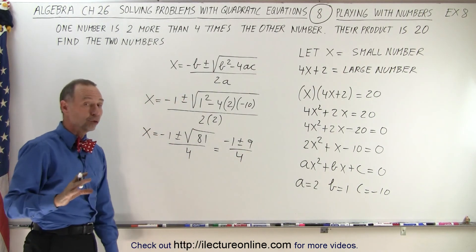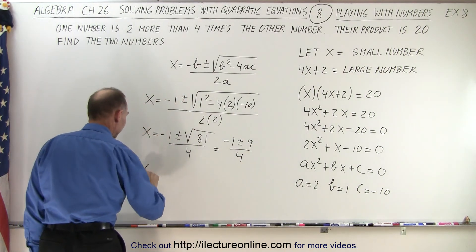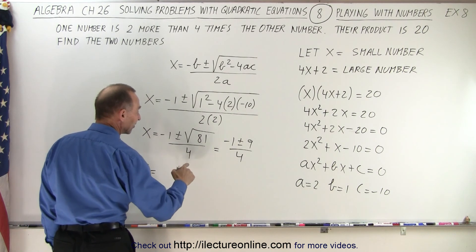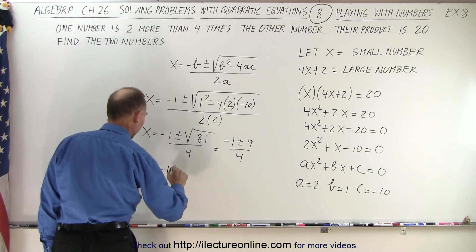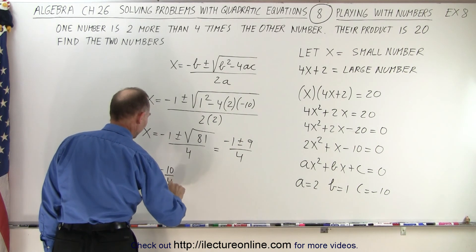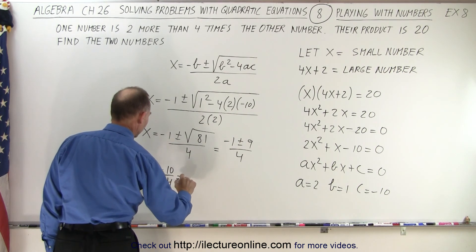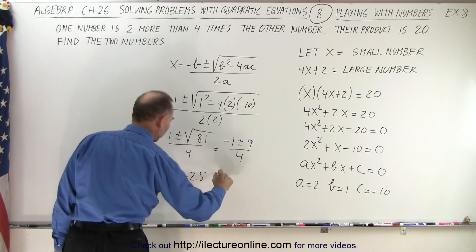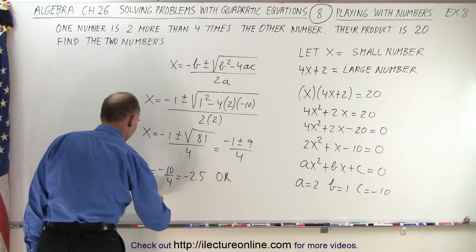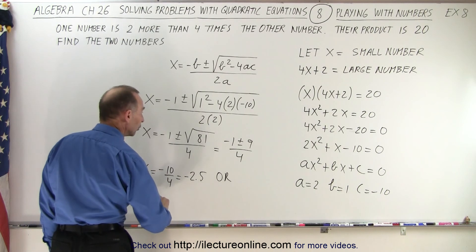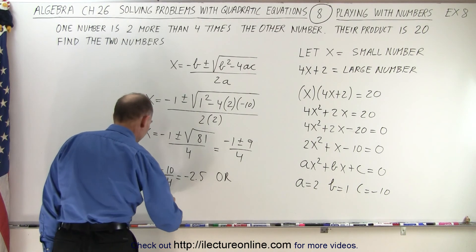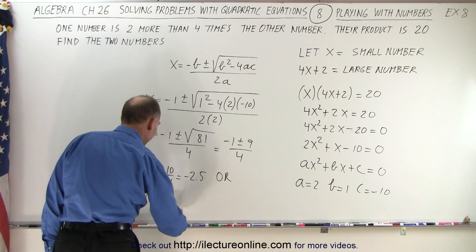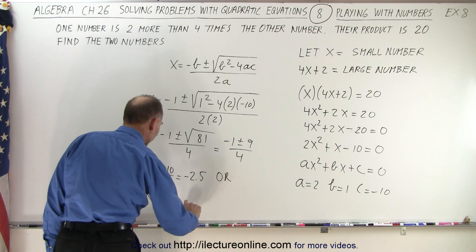That gives us two possible answers. x = (−1 − 9) / 4 = −10/4 = −2.5, or x = (−1 + 9) / 4 = 8/4 = 2.